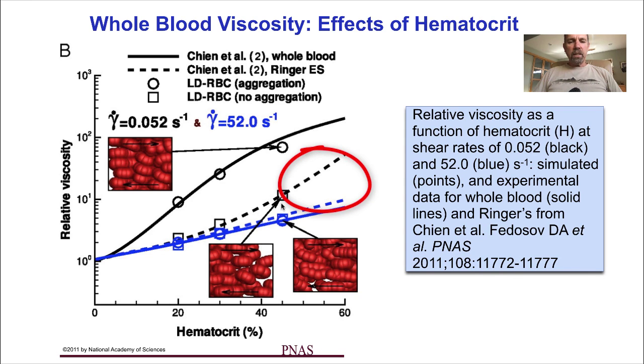Now the dotted lines here show the effects of preventing red blood cell aggregation with albumin. Note that by preventing Rouleau formation with Ringer's solution, the viscosity is greatly reduced at low shear rates, comparing the dotted black line with the solid black line. And this reduction increases with hematocrit, showing the importance of the Rouleau formation at low shear rates.